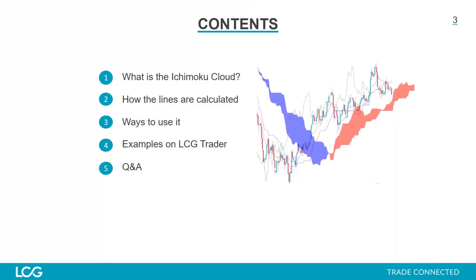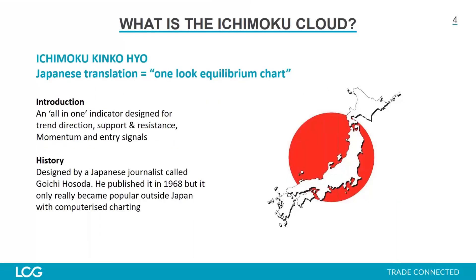So what is the Ichimoku cloud? As I said, it originates from Japan. The full name — easy to butcher — is Ichimoku Kinko Hyo. The Japanese translation, which actually makes sense when you dig into this, is called the 'one look equilibrium chart.' The idea is that you just look at it once and it covers multiple bases. It's an all-in-one indicator designed for trend direction, support and resistance, momentum, and entry signals.